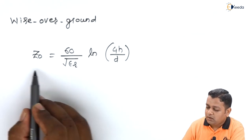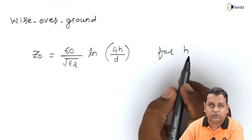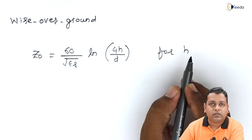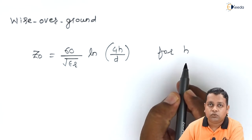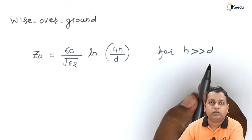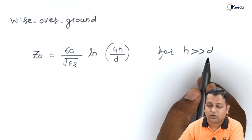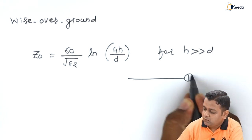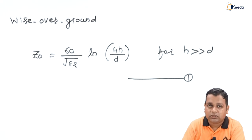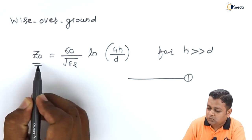This equation is valid under the condition that small h, the distance from the center of the circular cross-section conductor to the ground plane, is much greater than d, the diameter of the circular cross-section central conductor. This is equation number 1, to which we shall be making comparative modifications, deriving equivalent attributes corresponding to the microstrip line to obtain the final expression for Z0.